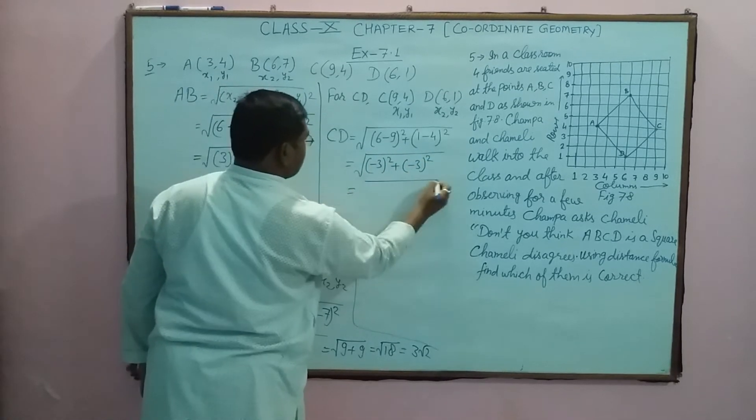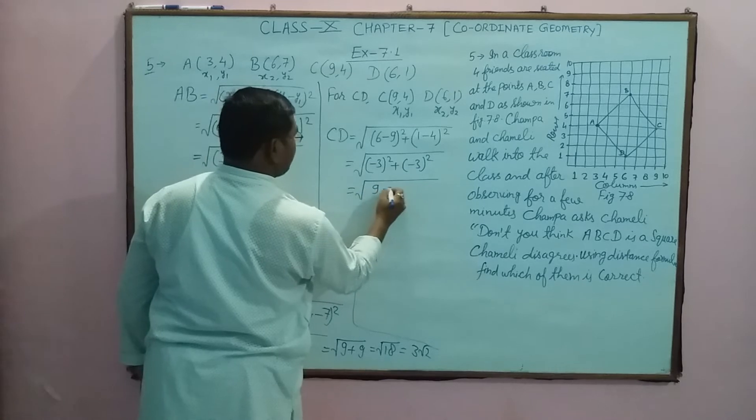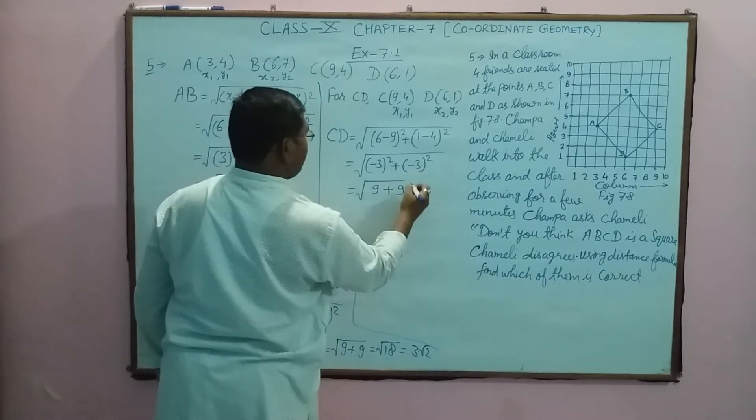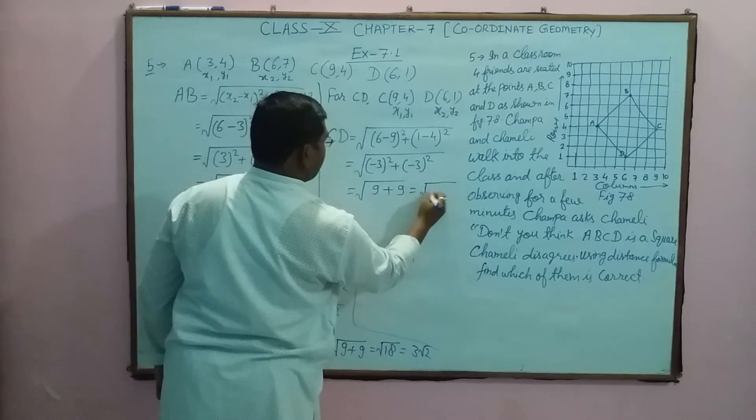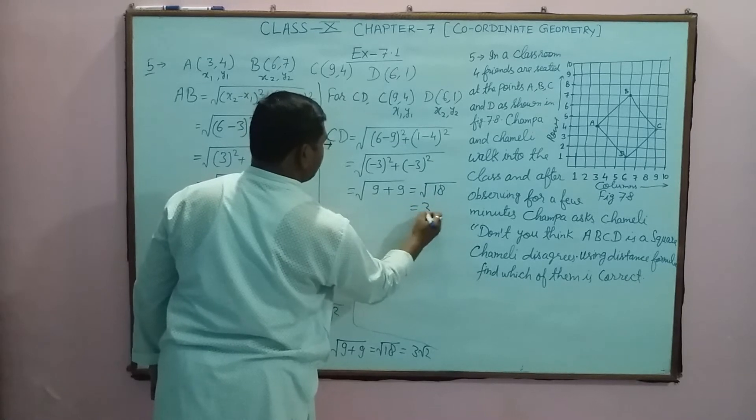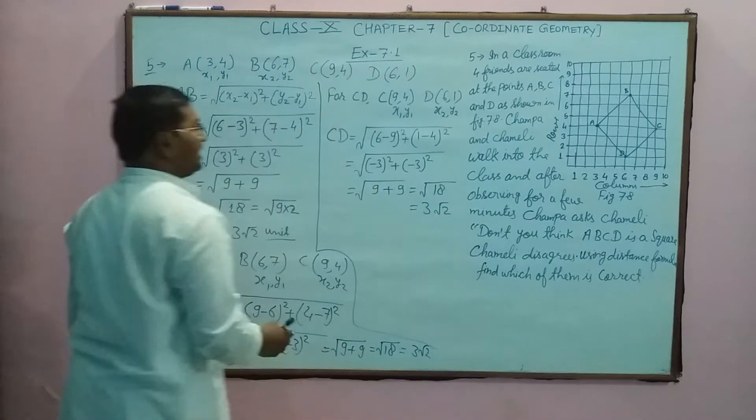Now square root: minus 3 squared plus minus 3 squared. So what is this? This is square root of 9 plus 9, it will be square root 18, this will be 3 root 2. CD is 3 root 2.